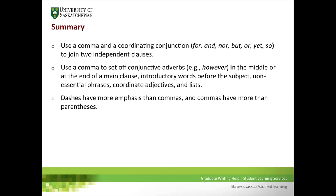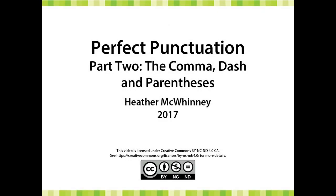To sum up: use a comma and a coordinating conjunction — one of the FANBOYS (for, and, nor, but, or, yet, or so) — to join two independent clauses. Use a comma to set off conjunctive adverbs such as 'however' in the middle or at the end of a main clause, to set off introductory words before the subject, to set off nonessential phrases, to set off coordinate adjectives, and to set off items in lists. Remember that dashes have more emphasis than commas, and commas have more emphasis than parentheses. Our next presentation is on the semicolon and the colon.